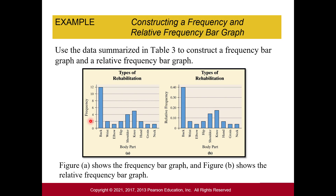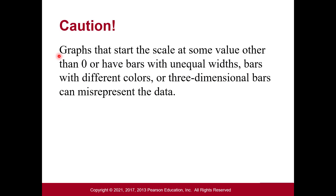Notice the first graph is our frequency graph and the second is relative frequency. The widths of each rectangle are equal, and the height represents frequency or relative frequency, starting at zero. We scale the vertical axis up to our biggest value, which was 12 for back, or 40%. A caution: graphs that start at a value other than zero, or that have bars with unequal widths, different colors, or three-dimensional bars can misrepresent the data.